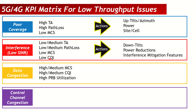If you have low MCS and low CQI with high PRB utilization, it is still considered an interference scenario. A low modulation scheme like QPSK uses a high number of resource blocks. If you remove the interference, MCS and CQI will increase, and you may shift to 64 QAM or 256 QAM, which uses far fewer resource blocks — and the congestion goes away. However, if you still have high MCS and high CQI but also high PRB utilization, then you fall into the data congestion category.